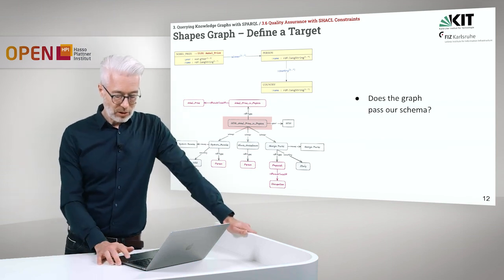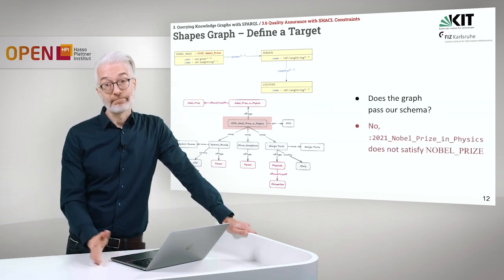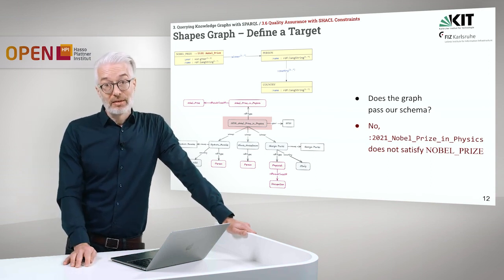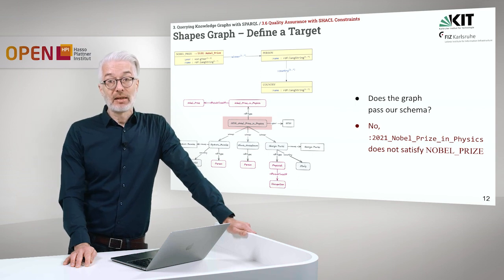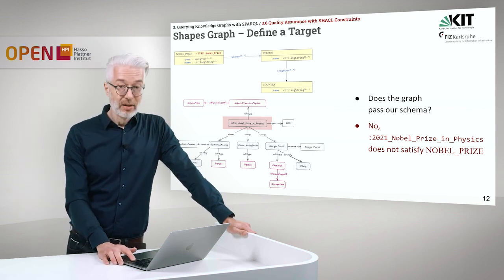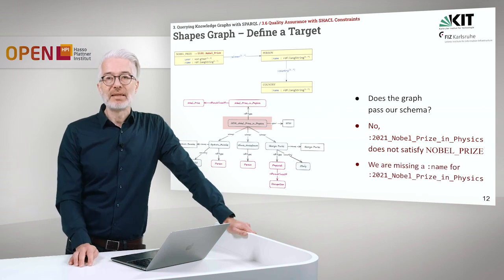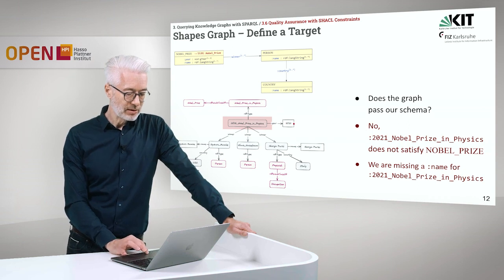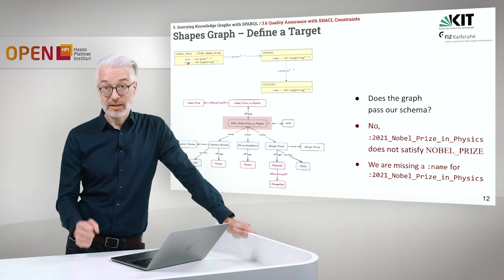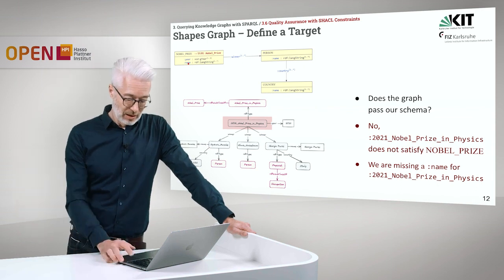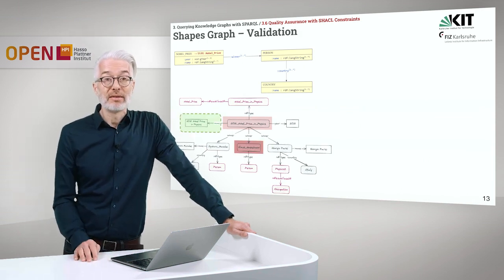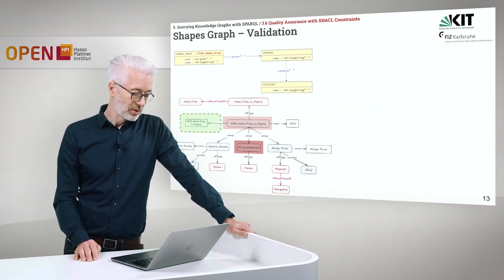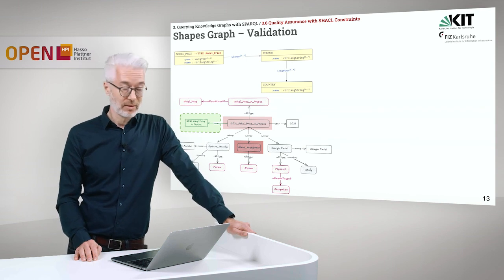Does the graph pass our schema? Unfortunately not. The 2021 Nobel Prize in Physics does not satisfy the Nobel Prize shape, simply because we are missing a name for the Nobel Prize in Physics. You have only the entity connected to a year, but it is not connected to a name. The shape requires a name. So let's add the name. We have added here in green a name: '2021 Nobel Prize in Physics' given as a string.